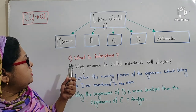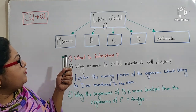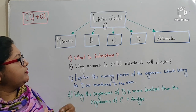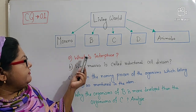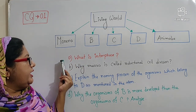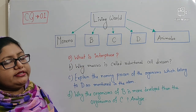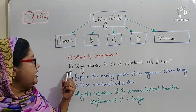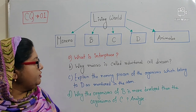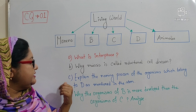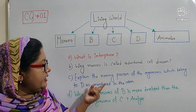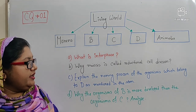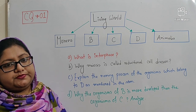Now, first of all, there are four types of questions in a creative question. In question A, you will get the knowledge-based question; in B, you will get the comprehensive question; in C, you will get an applied-based question; and in D, you will get a higher efficiency question.